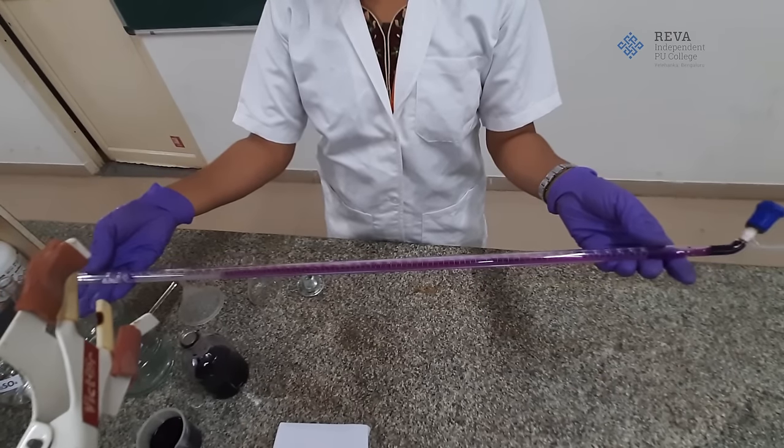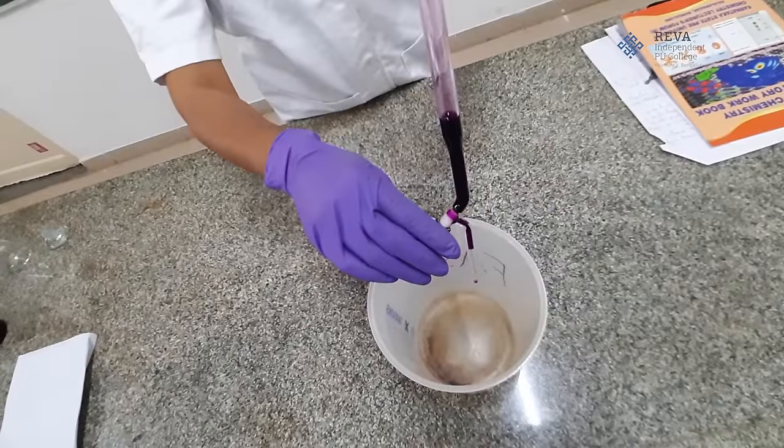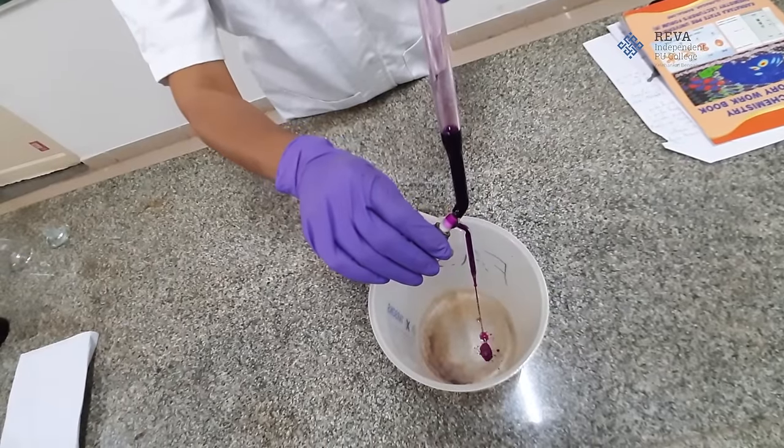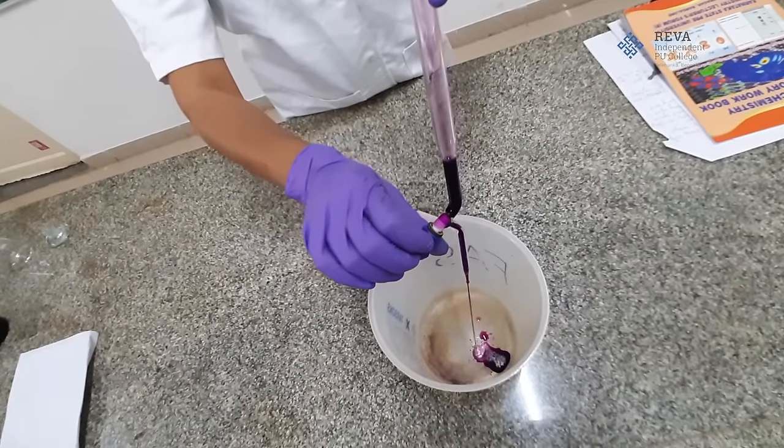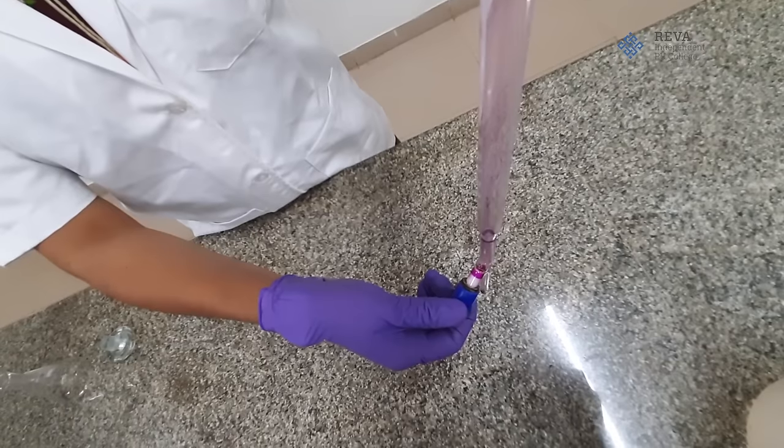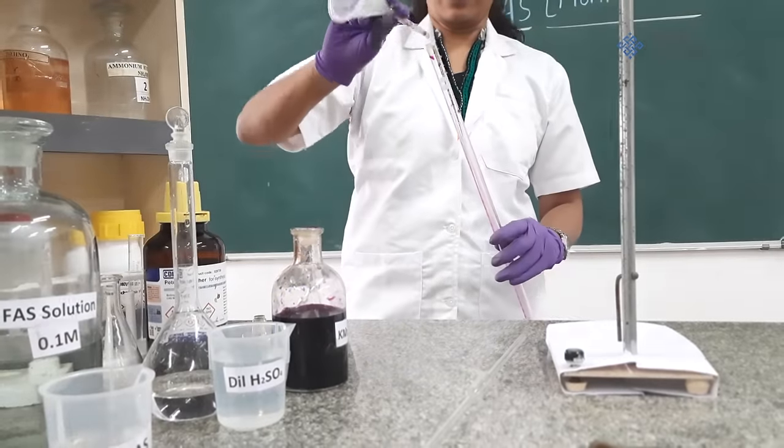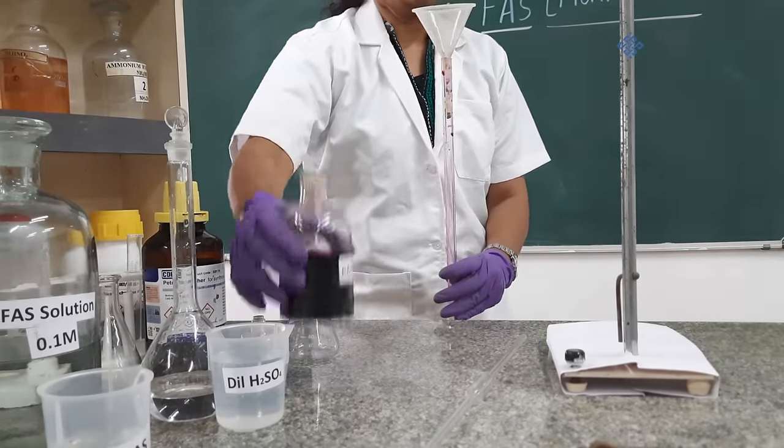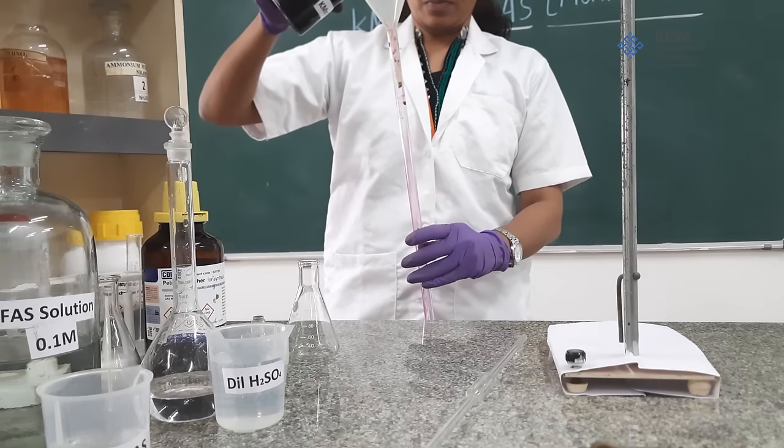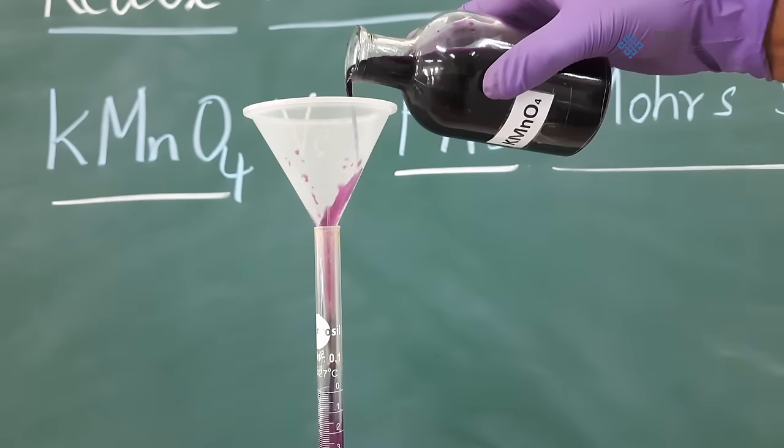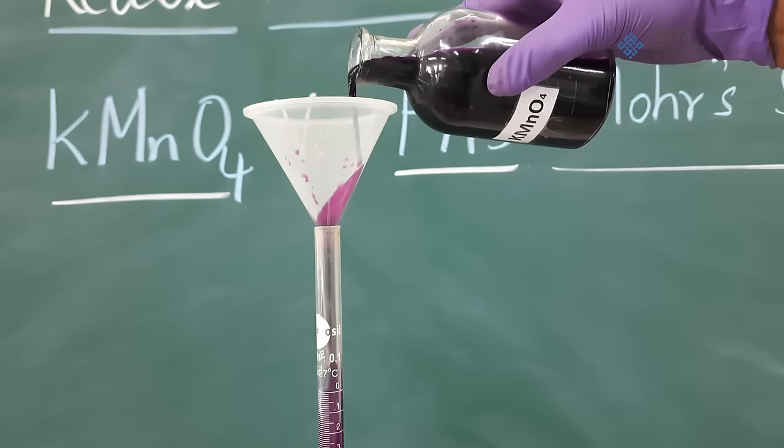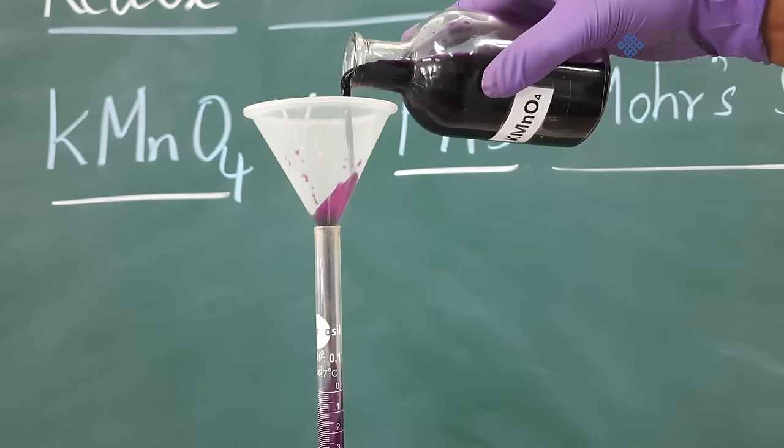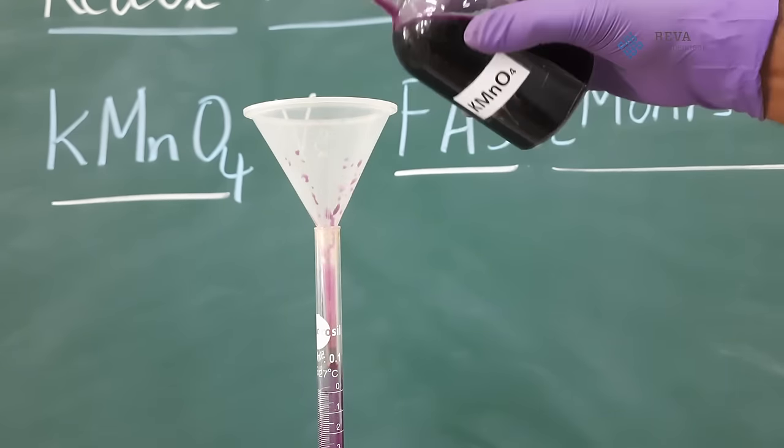Rinse the burette by rolling it and discard the solution from top end and then through the nozzle using stopper so that the concentration of potassium permanganate solution to be taken in a burette remains constant. Then using a funnel,